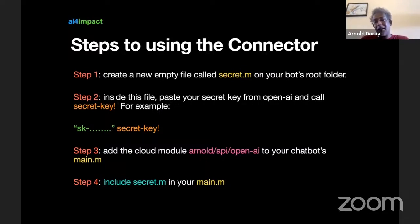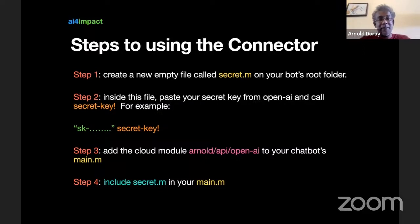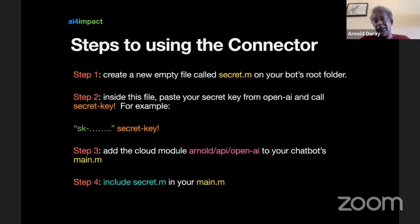You do need to use a cloud module. The cloud module is called 'arno' — which is my username — slash api slash open-ai. If you publish your own connector, it will be your username slash api slash open-ai or whatever name you gave it. This needs to be in your main.m, and in your main.m after the cloud include, you also need to include the secret key.